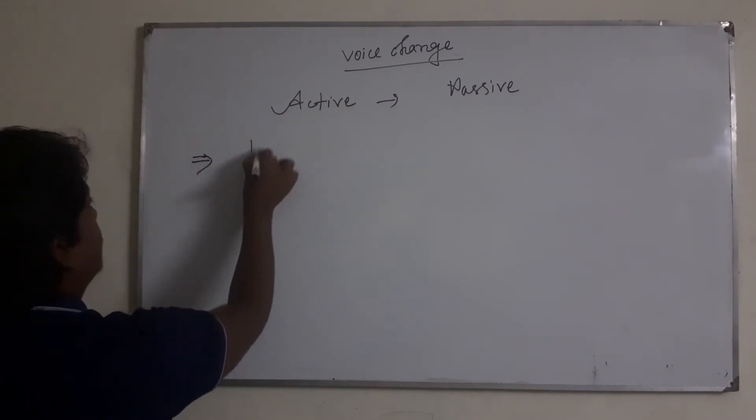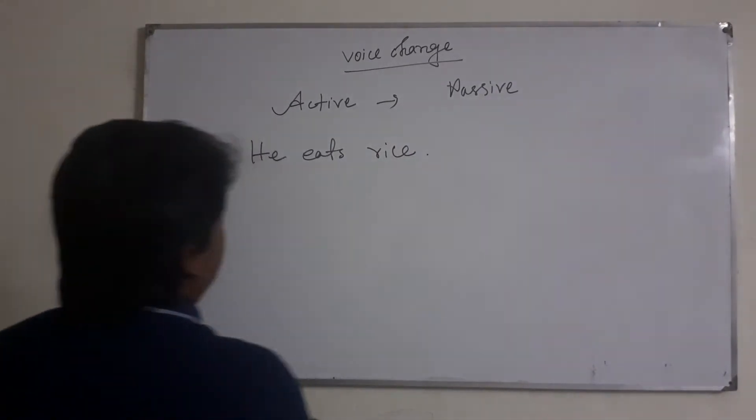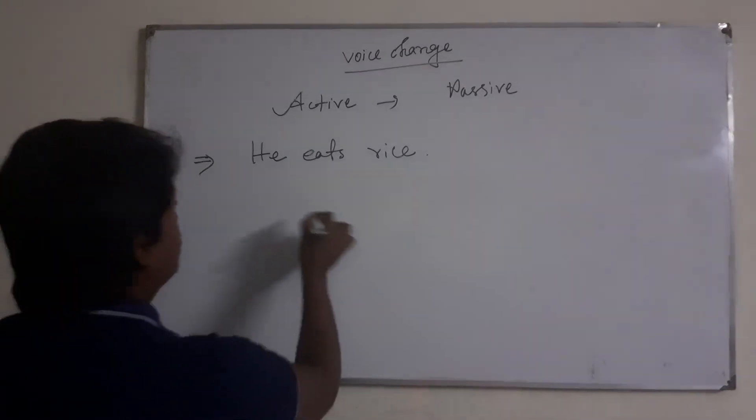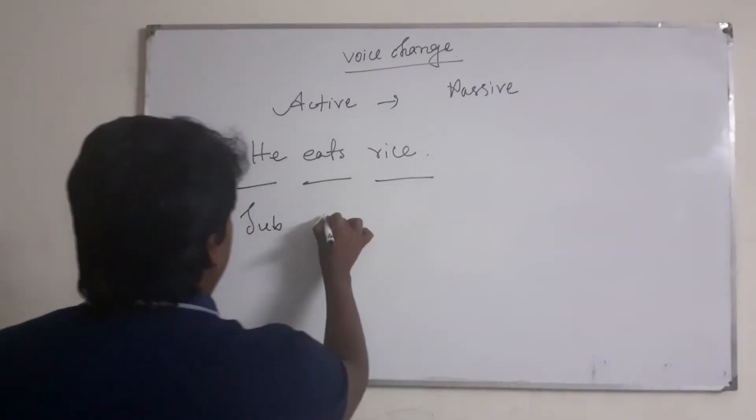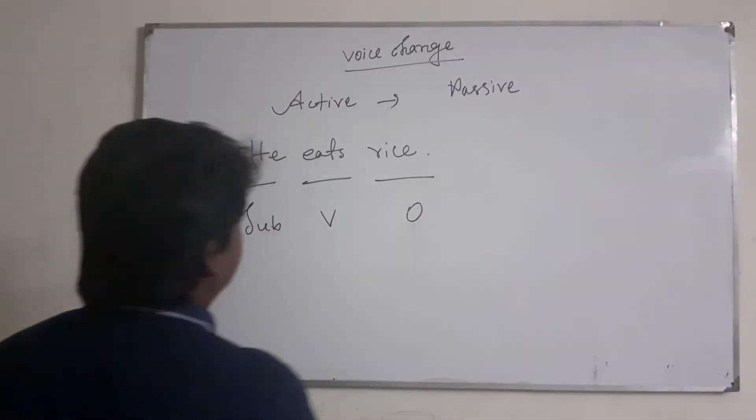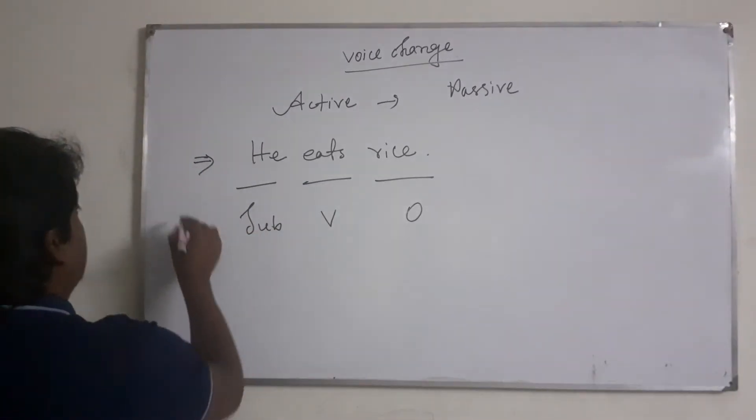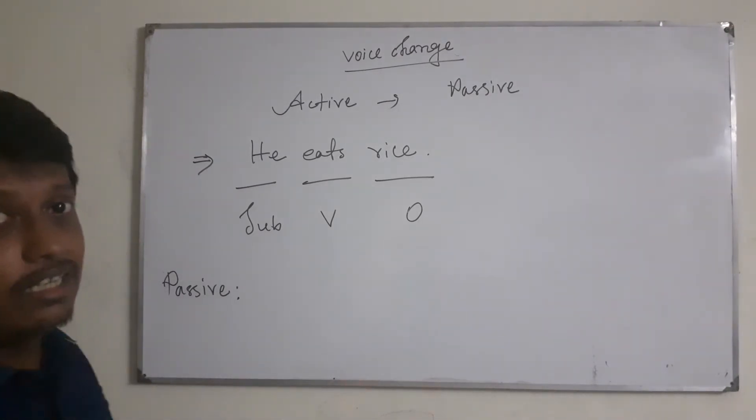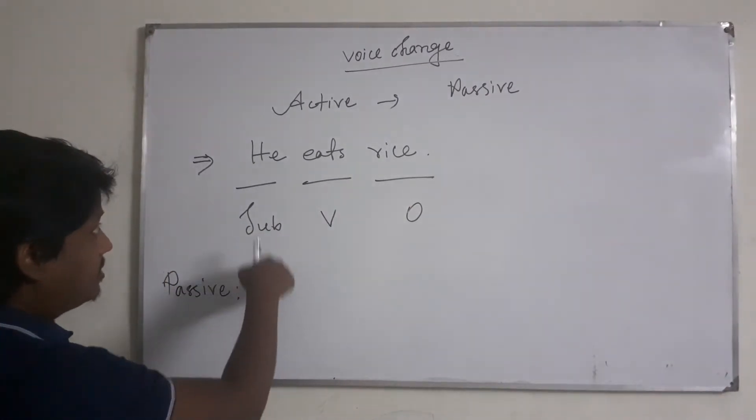First, let's take an example: 'He eats rice.' Here, who is the subject? 'He' is the subject. What about the object? The next step is: subject becomes object.